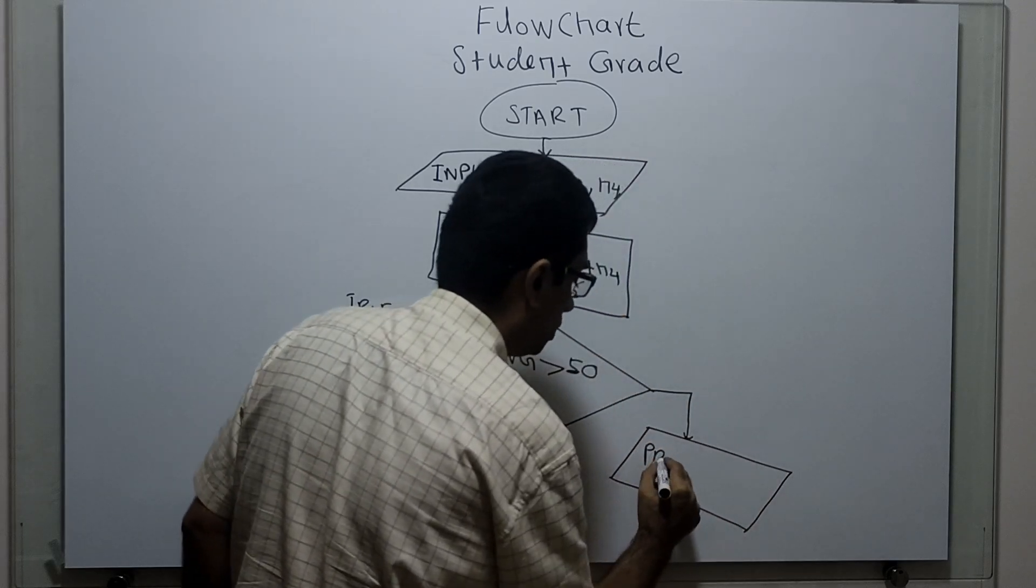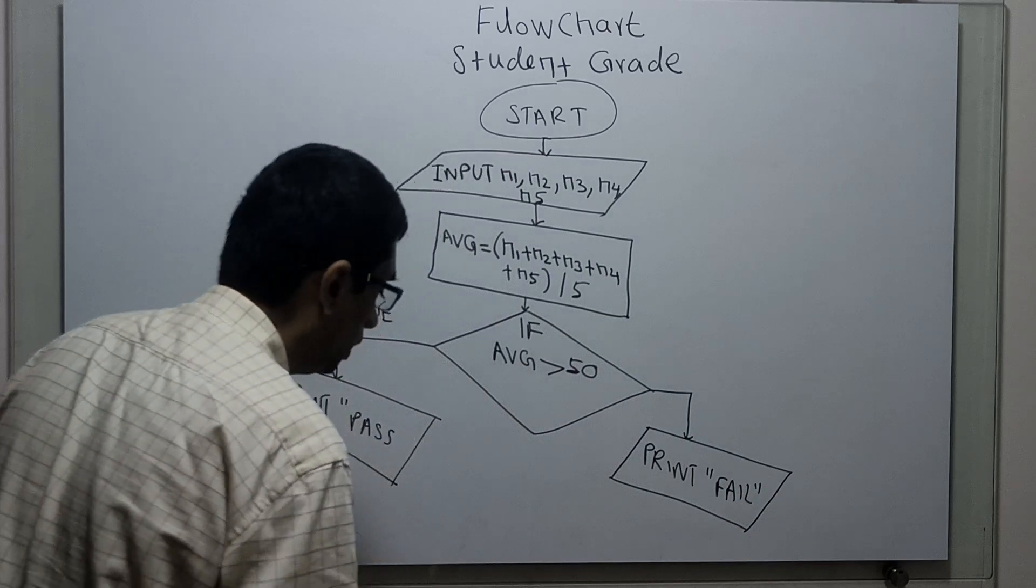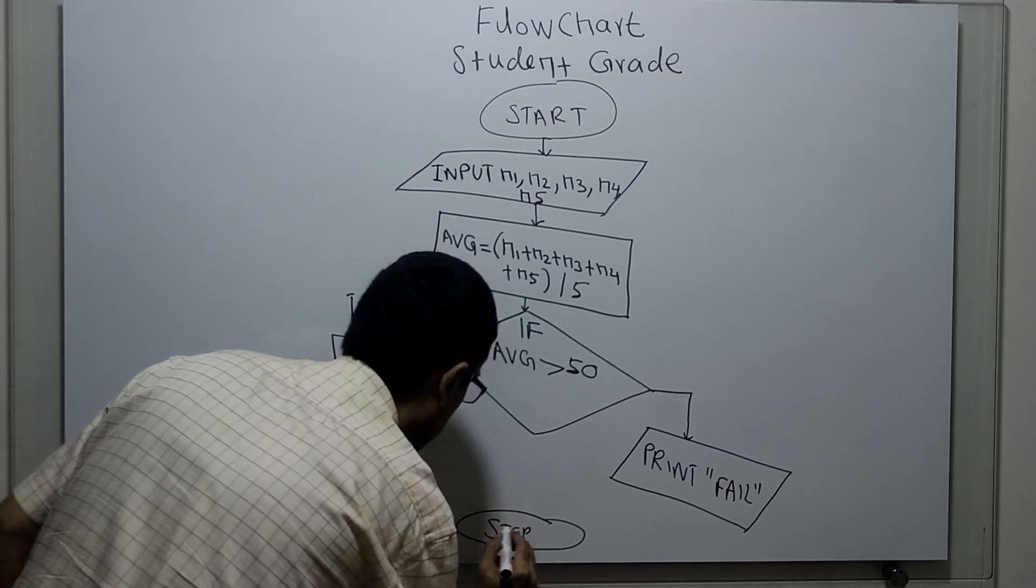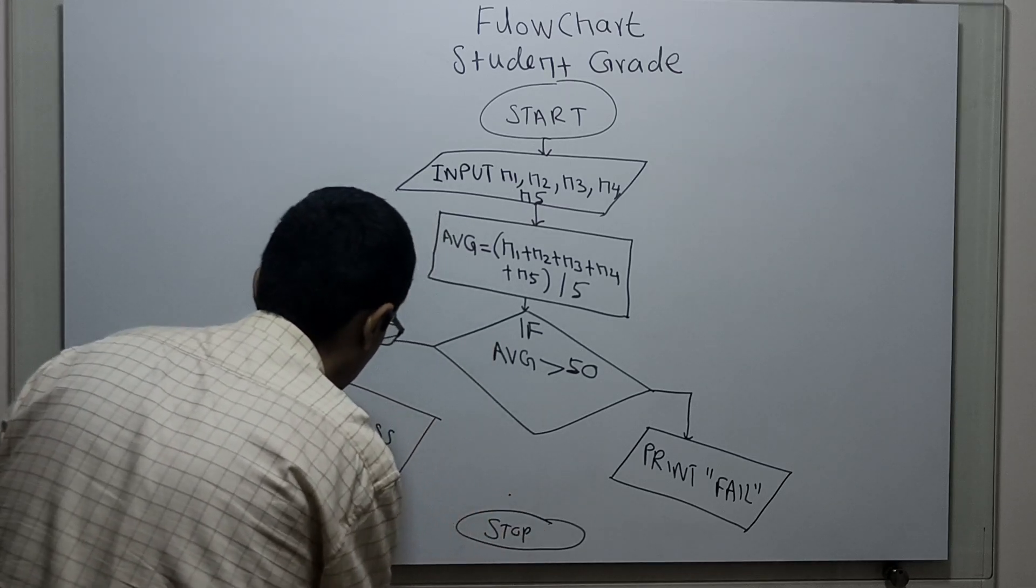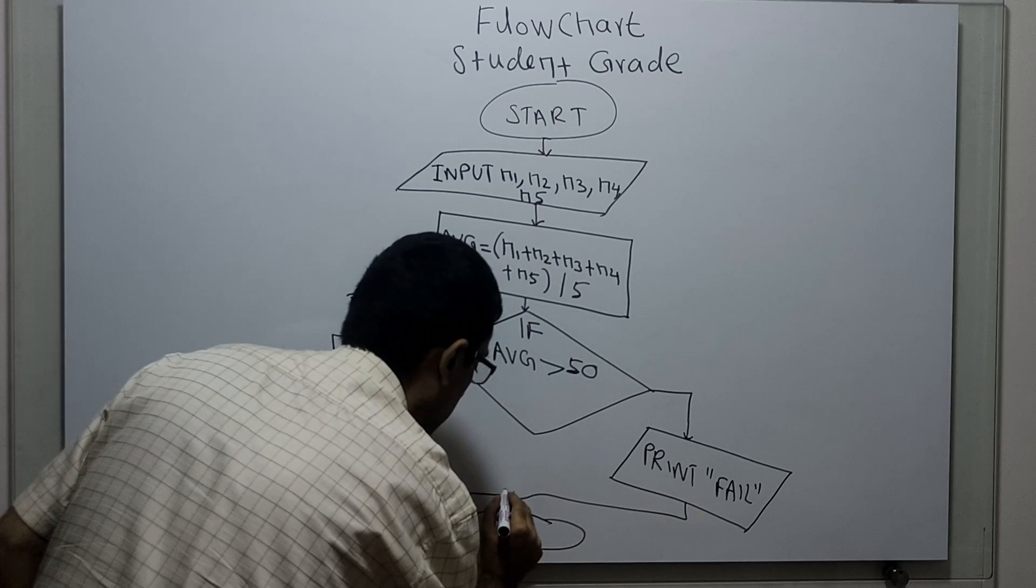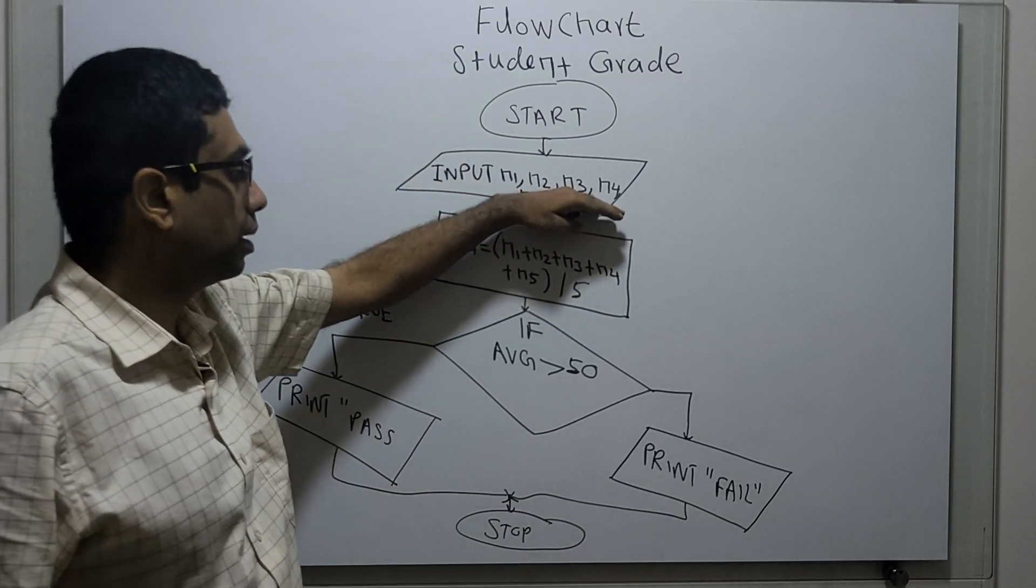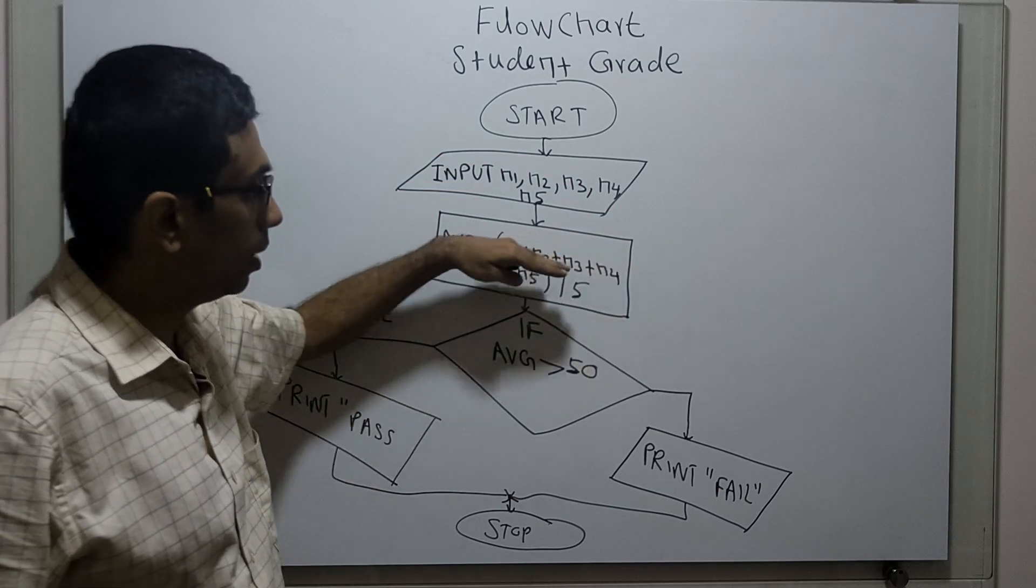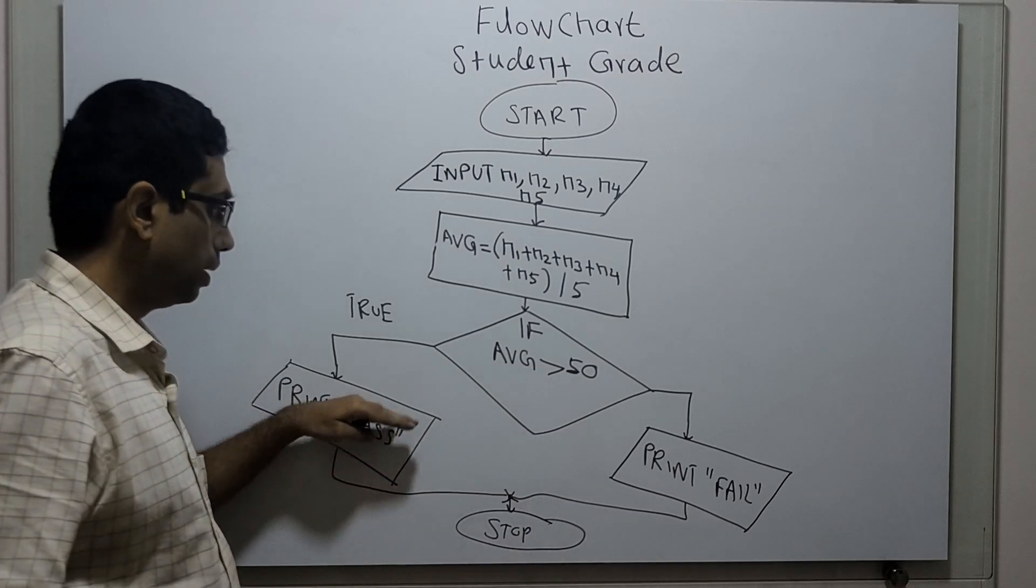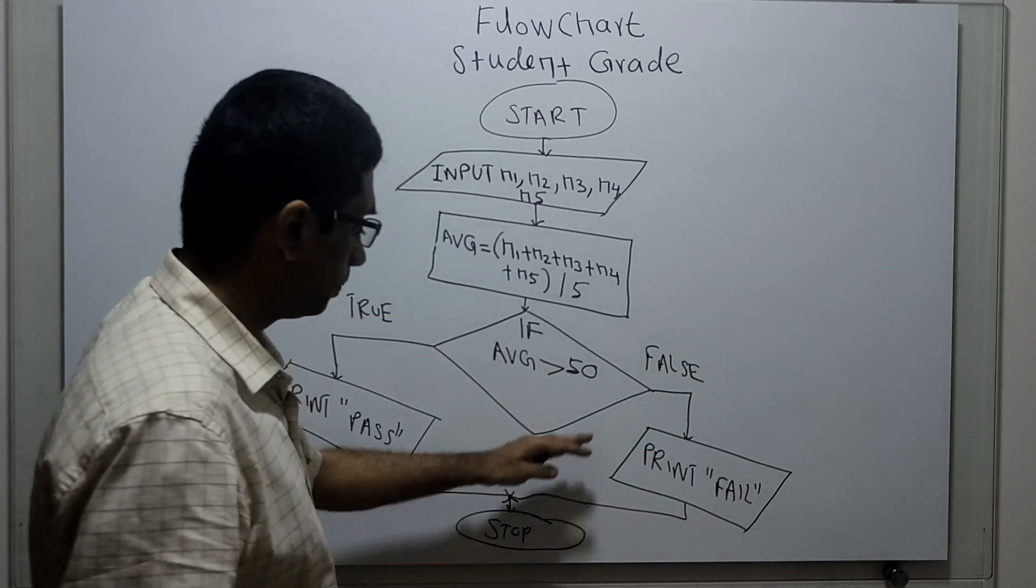I think that is right. This is the logical start of the flowchart. So start, I'm obtaining five subject marks and finding average, adding all the five subject marks divided by 5. If average greater than 50, I'm printing the grade as pass - this is true. If average greater than 50 is false, I'm printing the grade as fail and connecting it back to the logical start.